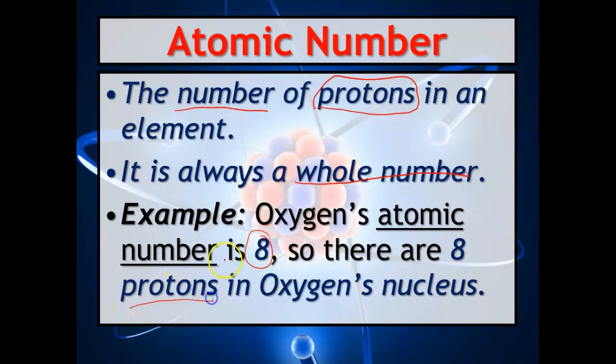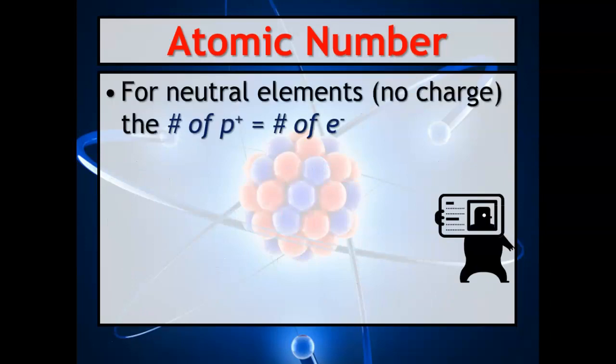Remember, we said protons are in the nucleus. So for neutral elements—neutral means no charge—the number of protons equals the number of electrons. Remember these are symbols for protons (p+) and electrons (e-).